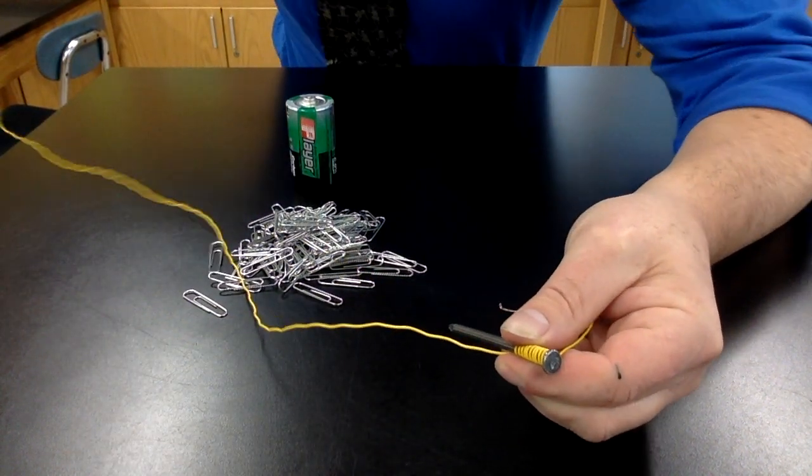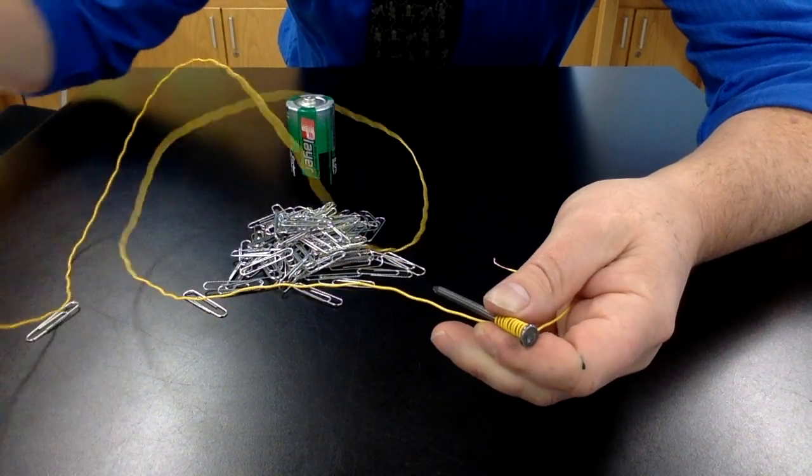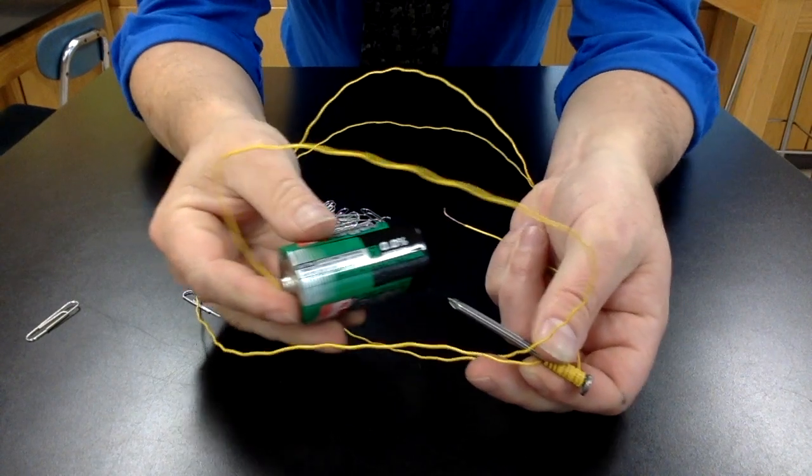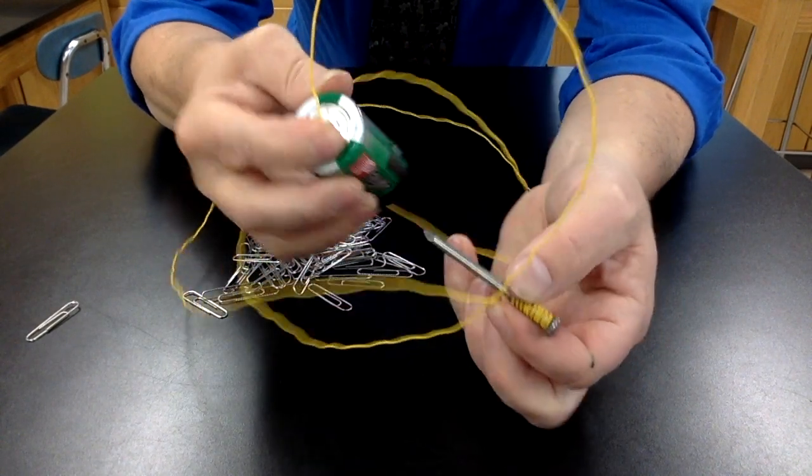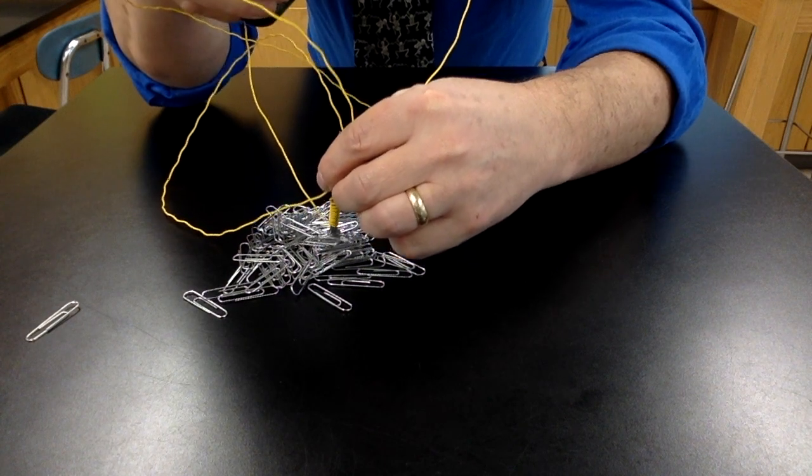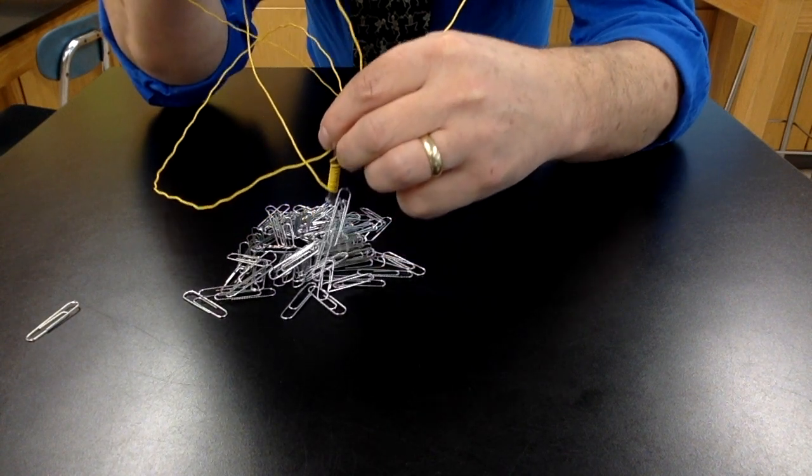One of them is way off this way, and the other's real near, and I'm going to connect them to my battery. Now, in order to have a complete circuit, I have to touch one wire to each side of that battery, and it makes my nail magnetic.